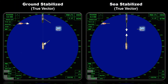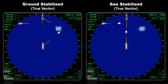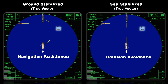For Target 2, ground stabilized shows a crossing situation, but own ship's vector shows a different direction based on her aspect. While in sea stabilized, both vessels show a clear vector that we are in a crossing situation based on their aspects. For the buoy in ground stabilized, it is very clear that the vector shows our ship is going towards a dangerous area, while in sea stabilized it does not. That is the reason why ground stabilized mode is used in coastal water for navigation assistance, while sea stabilized mode is used for collision avoidance.